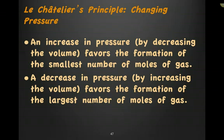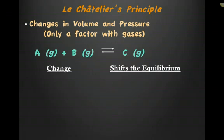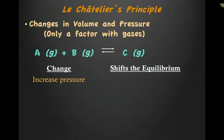Le Chatelier's principle involving a change in pressure: an increase in pressure by decreasing the volume favors the formation of the smallest number of moles of gas. Conversely, a decrease in pressure by increasing the volume favors the formation of the largest number of moles of gas. In this example, A plus B in equilibrium with C — all of them are gases. Remember, a change in volume and pressure is only important for systems containing gases. So if I increase the pressure, I go to the side with the smallest number of moles of gas.